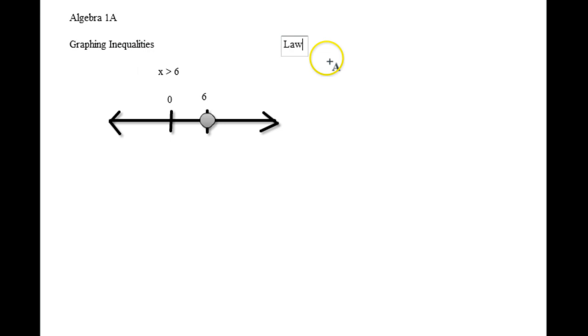Law of trichotomy says a number can be less than, can be greater than, or equal. It can be one of those three. It cannot be two of them, it cannot be all three of them. It has to be greater than, less than, or equal to any other number. So law of trichotomy we're just looking at less than, greater than, or equal to. And less than would be all the numbers to the left of the number on the number line, greater than would be all the numbers to the right, and equals would be that exact number.